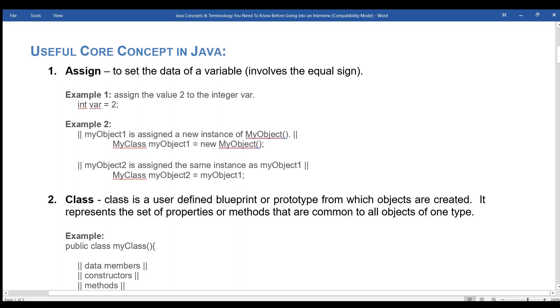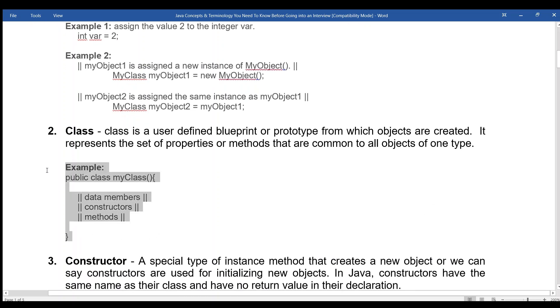Class: A user-defined blueprint or prototype from which objects are created. It represents the set of properties or methods that are common to all objects of one type. Example: public class myClass, data members, constructors, methods.